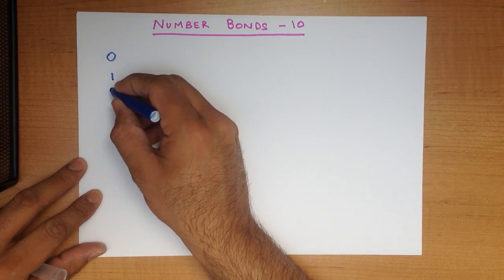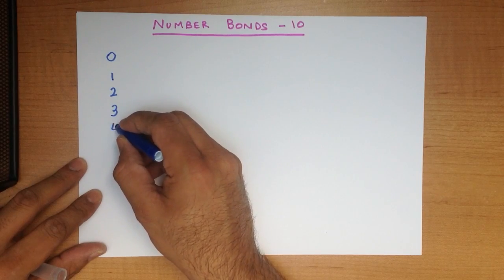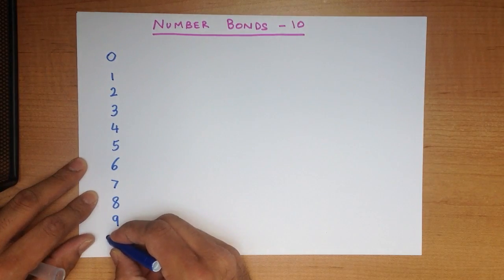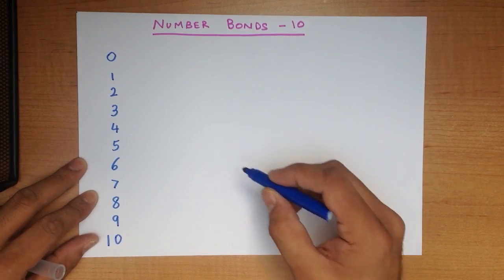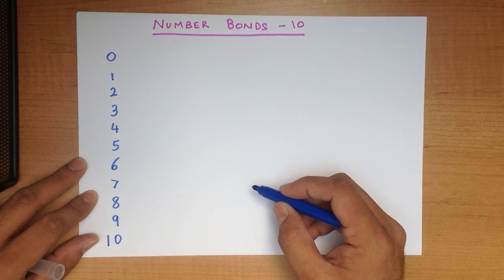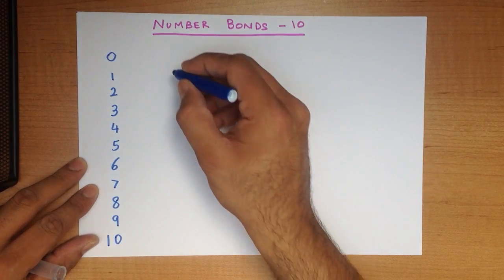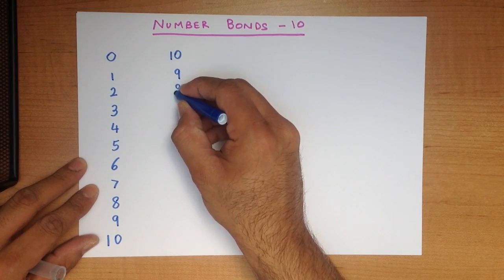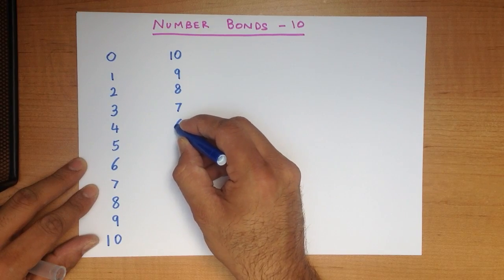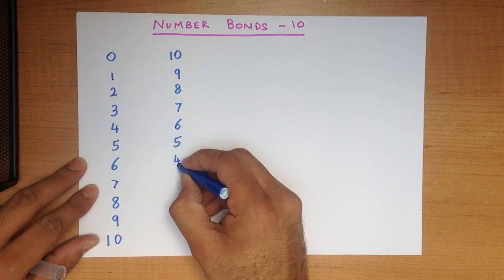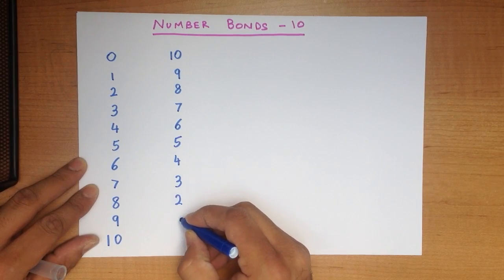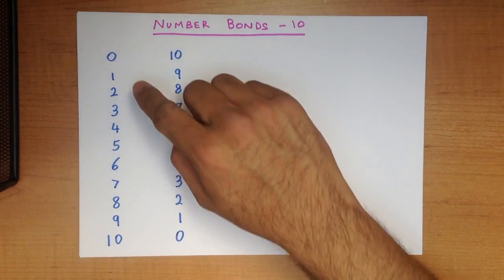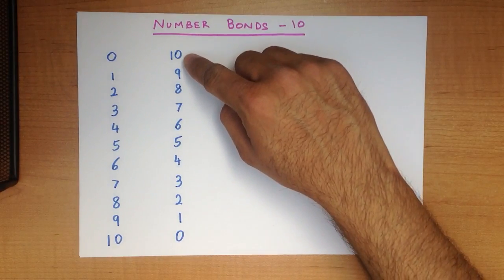0, 1, 2, 3, 4, 5, 6, 7, 8, 9, and 10. Now in another column I'm going to write the same numbers but in reverse order. So we're going to start at 10, then we're going to write 9, 8, 7, 6, 5, 4, 3, 2, 1, and 0.